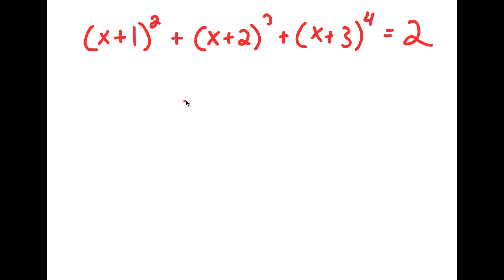In this problem, I have x plus 1 squared plus x plus 2 to the power of 3, plus x plus 3 to the power of 4, is equal to 2.